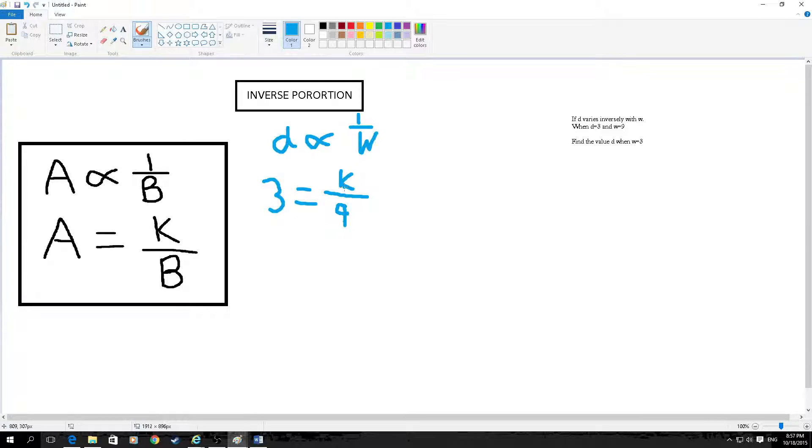First of all you want to find what k is. So you take the numbers and times them. Because this is already divided, you take this over, but it becomes times. So then...